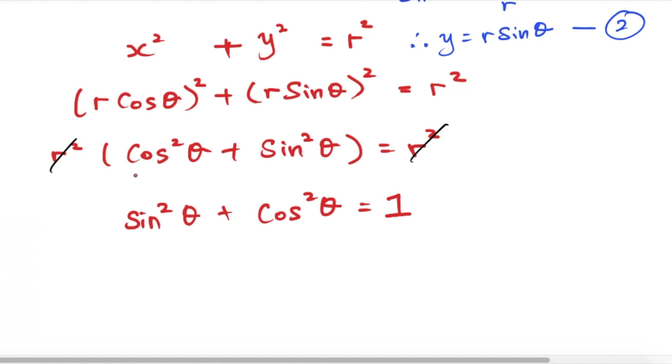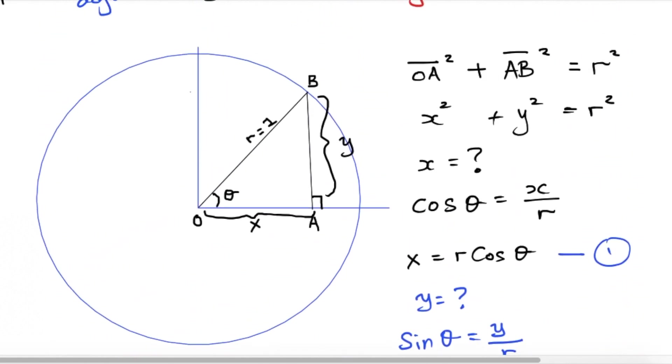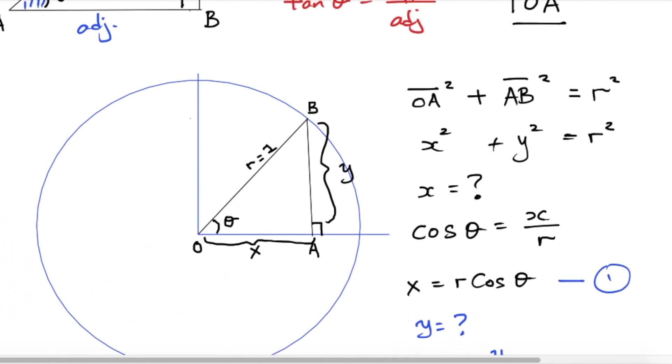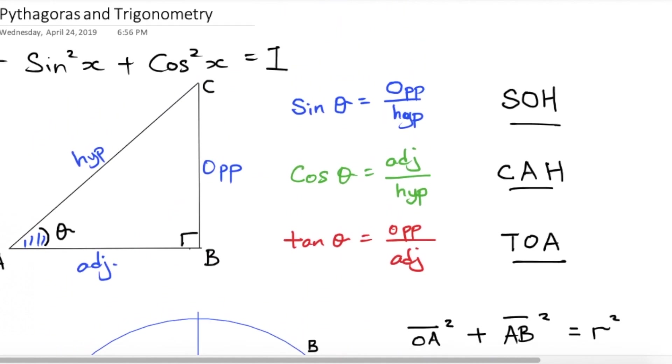So this proves that sine squared X plus cos squared X is equals to 1. I think that's all from me. Appreciate thumbs up, subscribe to my channel, stay tuned for my next video.